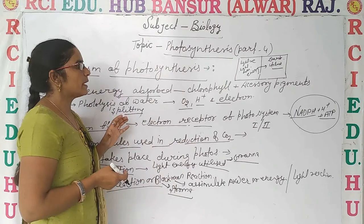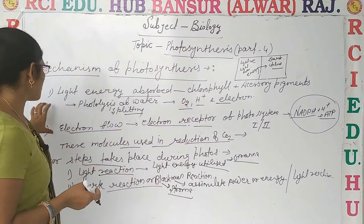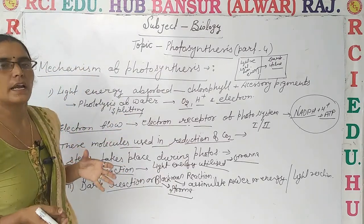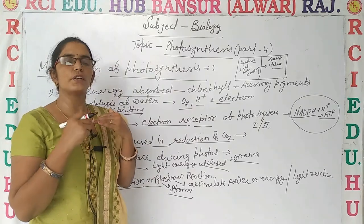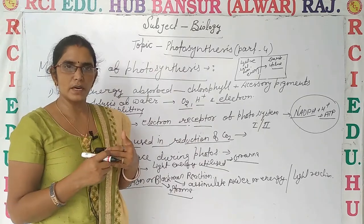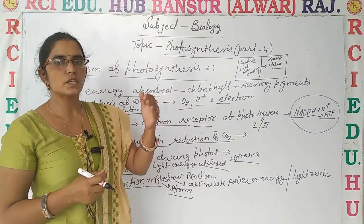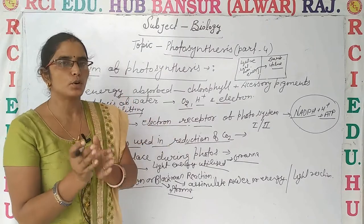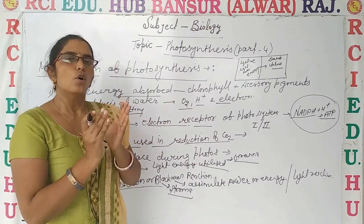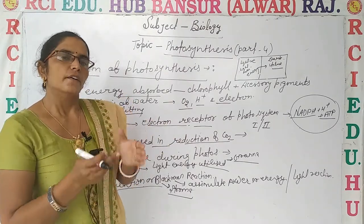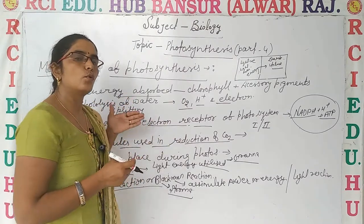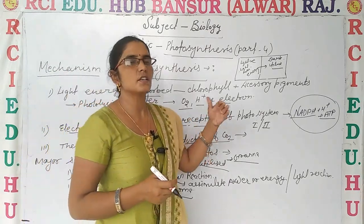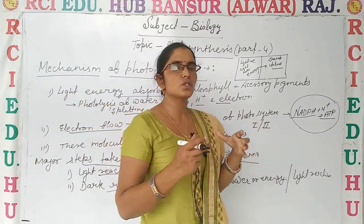To summarize, there are three steps in the mechanism of photosynthesis. First, light energy is absorbed by chlorophyll and accessory pigments, causing photolysis of water into oxygen, protons, and electrons. Then the electrons flow through electron receptors and energy is produced in the form of NADPH + H⁺ and ATP.